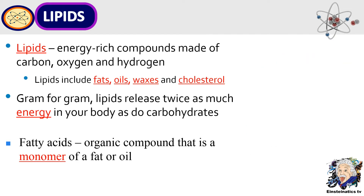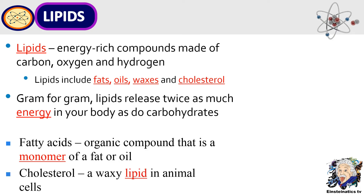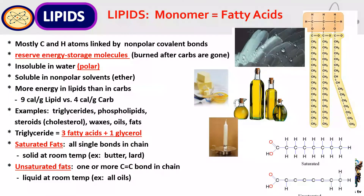The building block of lipids are known as fatty acids. Another example of lipids is cholesterol, which is a waxy lipid found in animal cells. Lipids are made mostly of carbon and hydrogen atoms linked by non-polar covalent bonds. The function of lipids in our body is that they serve as energy storage molecules. Lipids are also insoluble in water. Examples include triglycerides, phospholipids, steroids, waxes, oils, and fats. There are two types of fats: saturated fats, which are solid at room temperature, and unsaturated fats, which are liquid at room temperature.